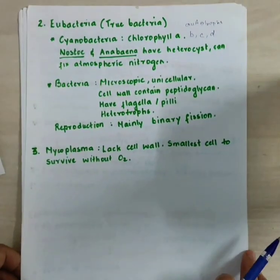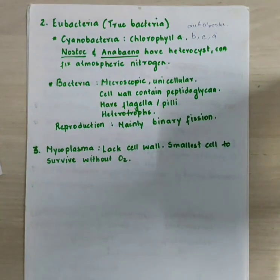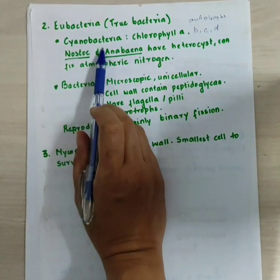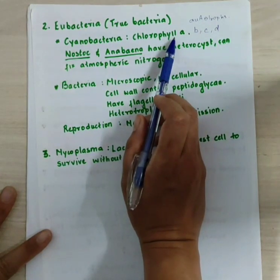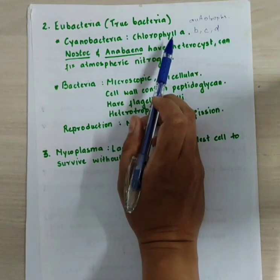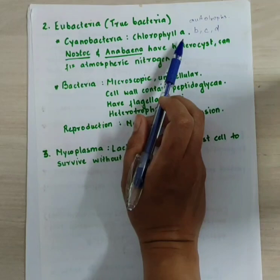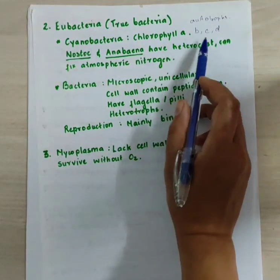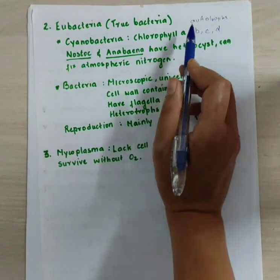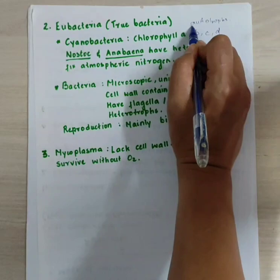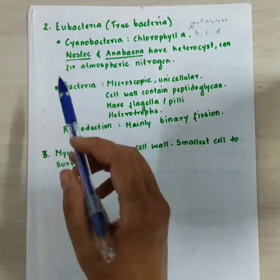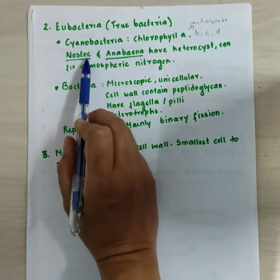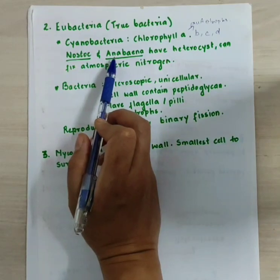Eubacteria are also known as true bacteria. Under eubacteria, we have cyanobacteria. Cyanobacteria have chlorophyll a. Chlorophyll is present in higher plants and is used for photosynthesis. There are different types of chlorophyll — a, b, c, d — and in cyanobacteria, chlorophyll a is used for photosynthesis, making them autotrophs. There are different organisms under cyanobacteria, and the most important ones are Nostoc and Anabaena.